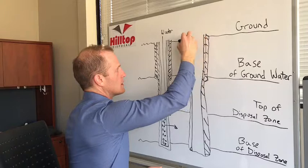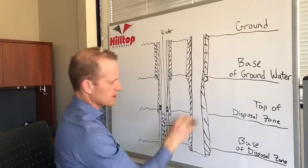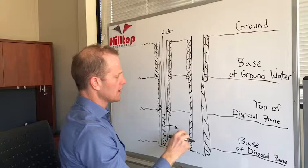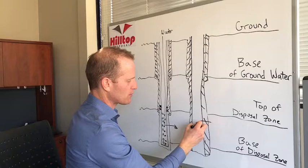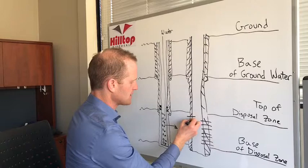Now this is a little different because all of a sudden now your casing is all the way through your disposal zone and it's cemented top to bottom. You obviously can't inject into your disposal zone at this point, so you have to go in with perforating guns, explosive shape charges and perforate holes in your casing into your formation.